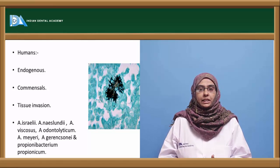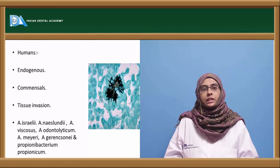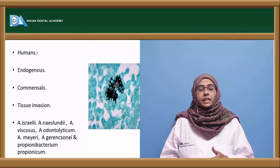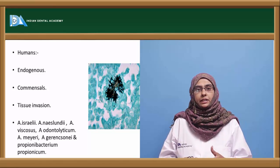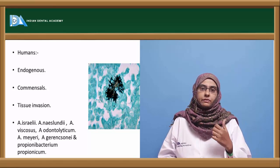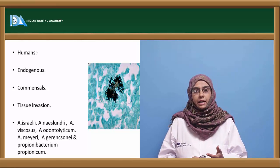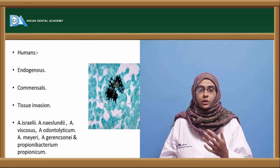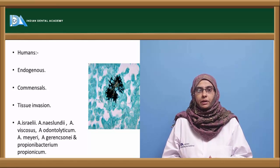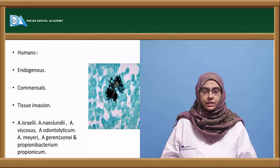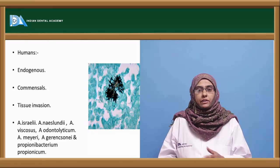Actinomycosis is mostly a human disease and is endogenous in nature because actinomycetes are common flora of humans, present in the mouth, intestines, and vagina. Any damage to these areas — such as foreign body damage or poor oral hygiene — allows the organism to invade tissue and cause infection. Hence it is called an endogenous infection, with tissue invasion occurring only when there is damage.